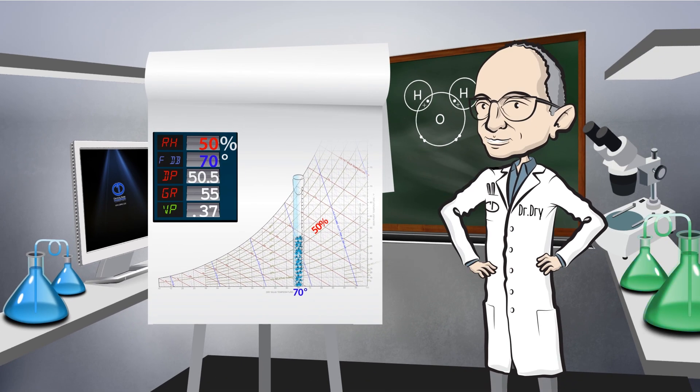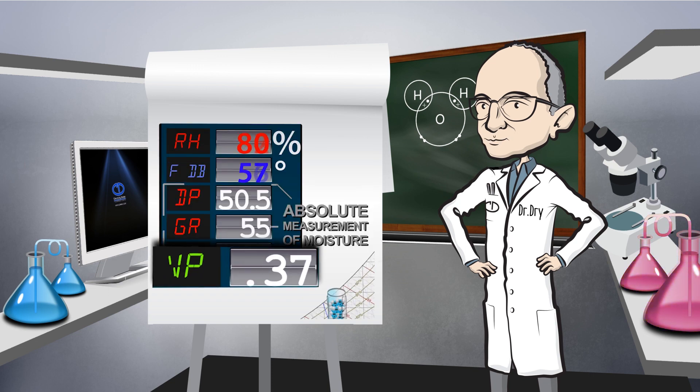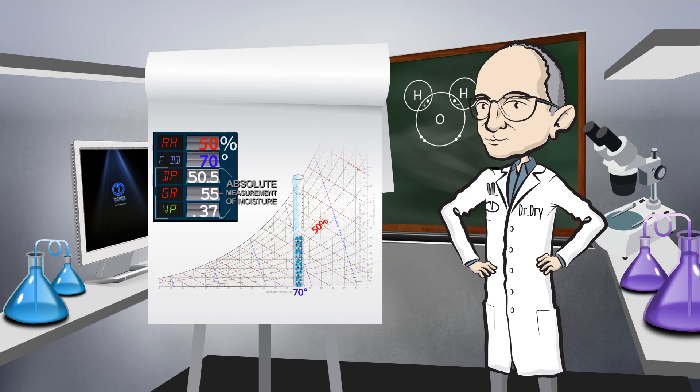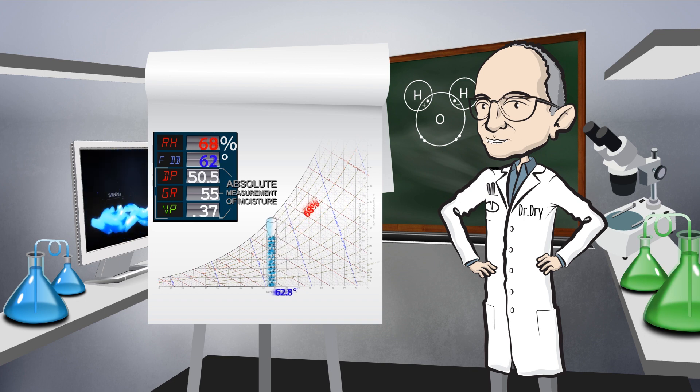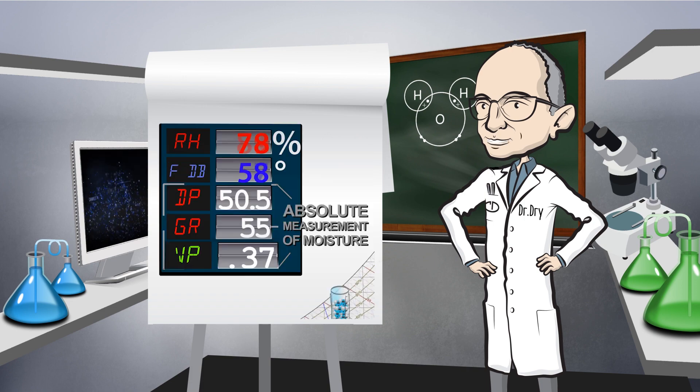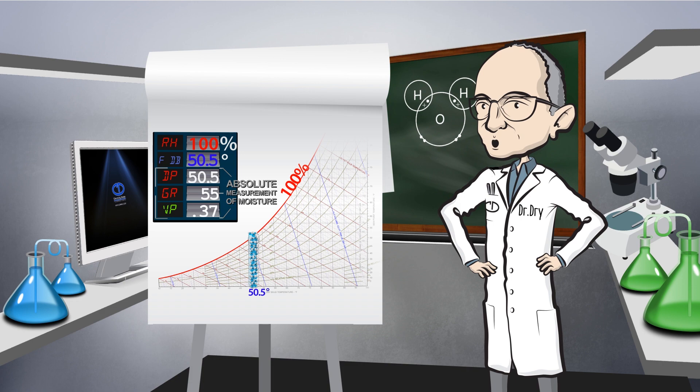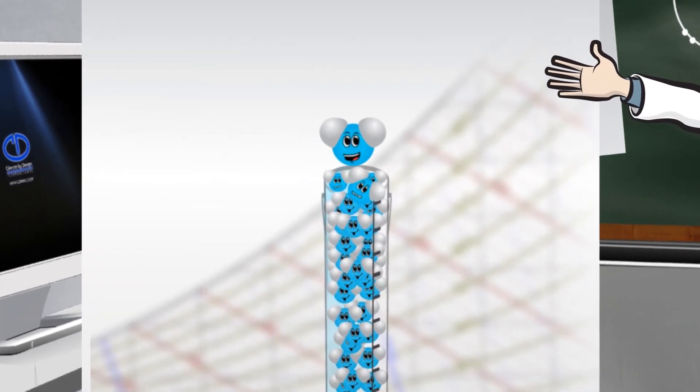In our subject today, moisture and air measured as vapor pressure. Vapor pressure is a measurement of the partial pressure or that part of the pressure of the moisture in the air. It is an absolute measurement of moisture, meaning it does not change with a temperature increase or decrease unless, of course, you get to the point of condensation.